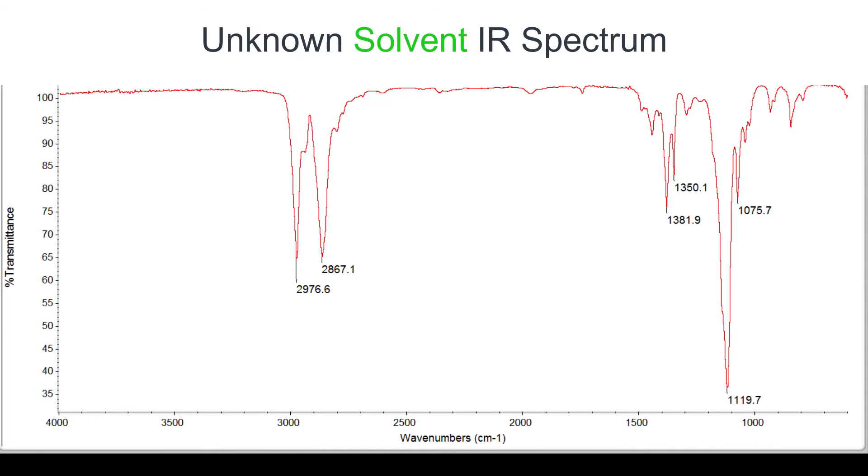Now you have IR data for your unknown solvent, density relative to water, and the boiling point of your unknown solvent and that should be more than enough information to correctly identify the unknown solvent among the three possible choices.